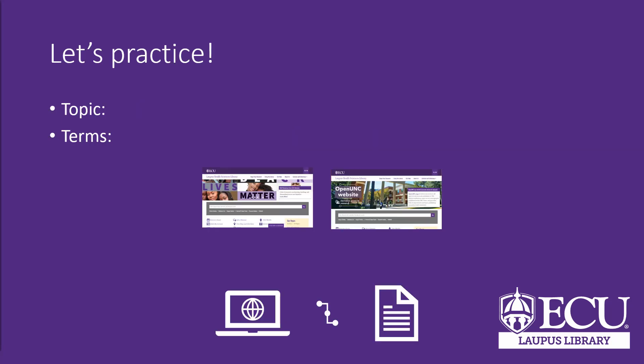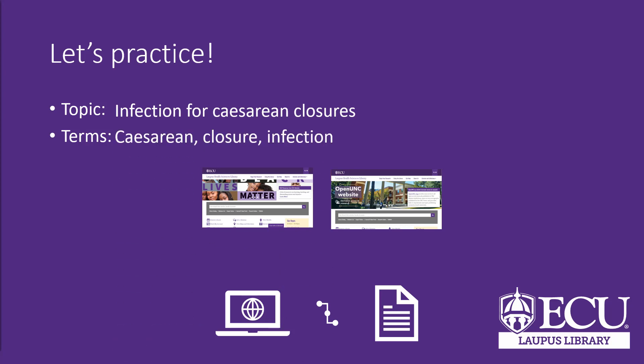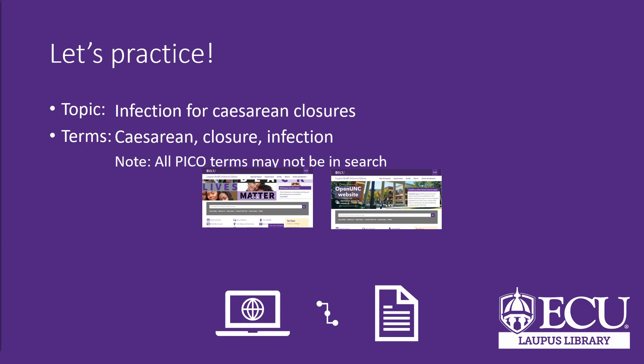So now we're going to practice this in OneSearch and PubMed. Our topic is infection for cesarean closures. We might choose terms such as cesarean, closure, and infection. As you see in my example, you don't always need to use all of your PICO terms in the same search.